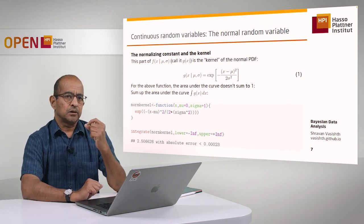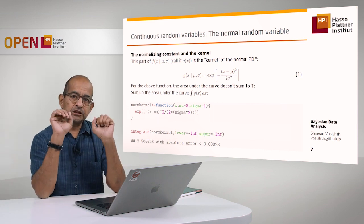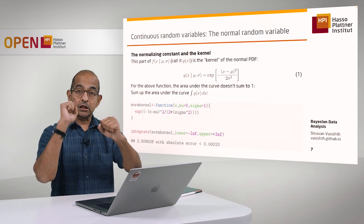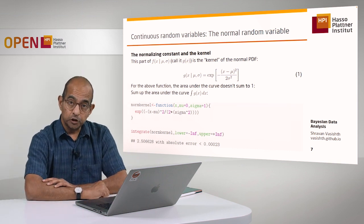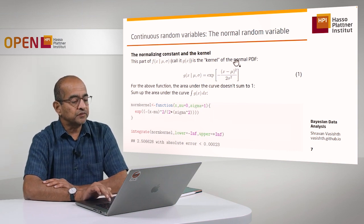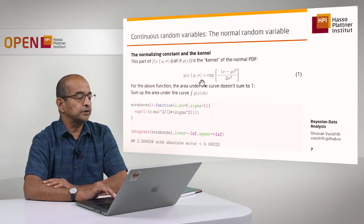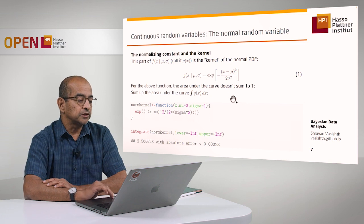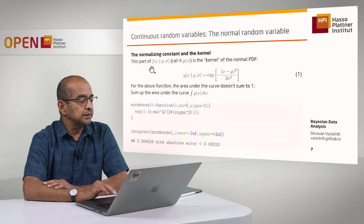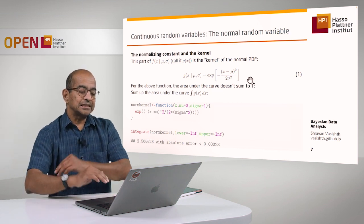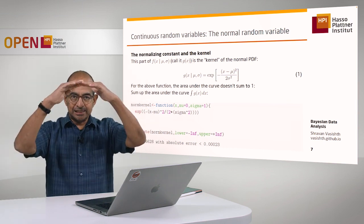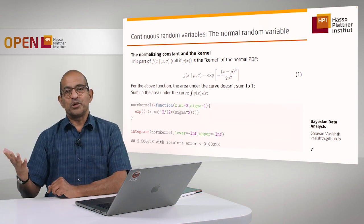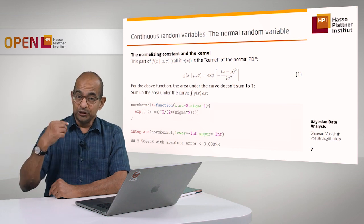One very important aspect of a probability density function is that it always has two components: one component is the normalizing constant, and the other is the kernel. In the case of the normal distribution, one part is the term with the exponential, which I'll call the kernel — I'm calling it g(x) to distinguish it from f(x). What's interesting is that this kernel actually defines the distinctive shape of the normal distribution.